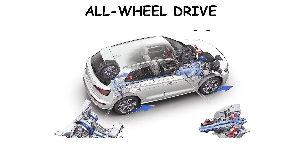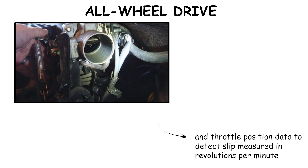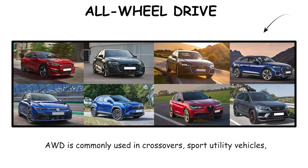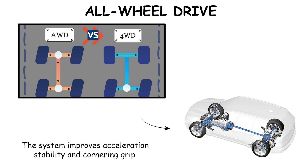All Wheel Drive systems rely on wheel speed sensors, yaw sensors, and throttle position data to detect slip measured in revolutions per minute. AWD is commonly used in crossovers, sport utility vehicles, and premium sedans to enhance traction on wet, snowy, or uneven road surfaces. The system improves acceleration stability and cornering grip compared to two-wheel drive layouts.